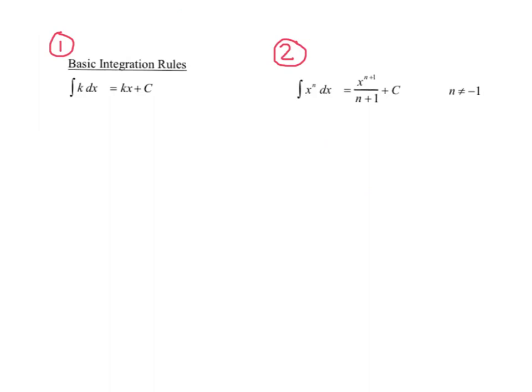Rule number one: the integral of k dx is equal to kx plus c. Notice the dx here — that means I'm integrating with respect to x, but I don't have an x in my problem. What that's implying is that k is a constant.